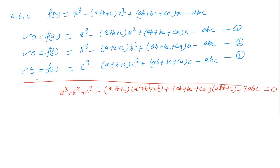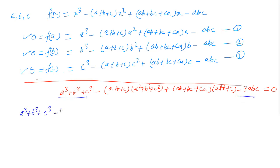Adding the three equations, (a+b+c) is a common factor. We take it out and we are left with a²+b²+c². Also taking (ab+bc+ca) as a common factor, we are left with (a+b+c). Adding the last terms gives -3abc. The entire sum equals zero.